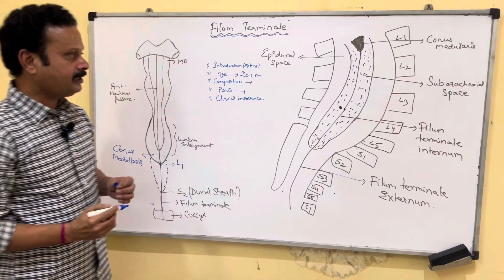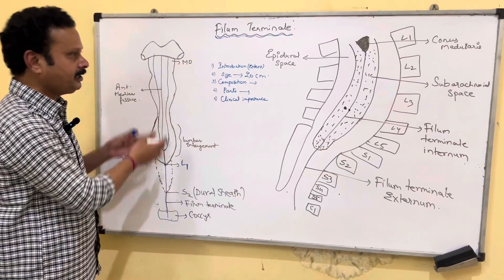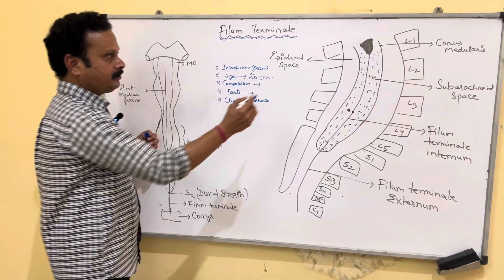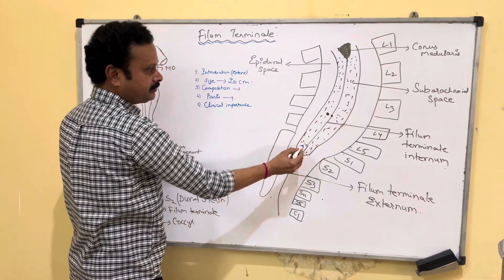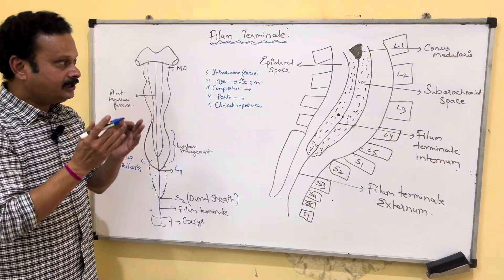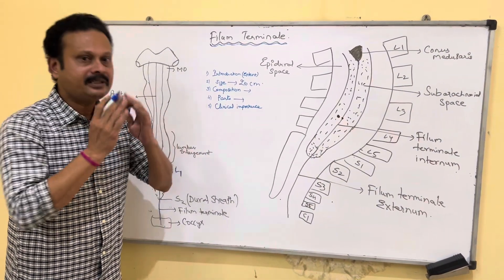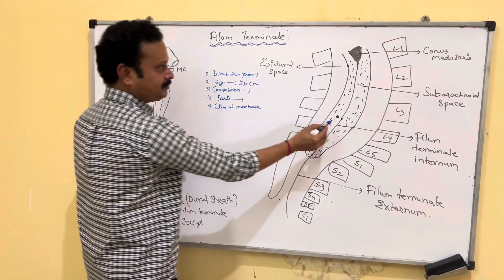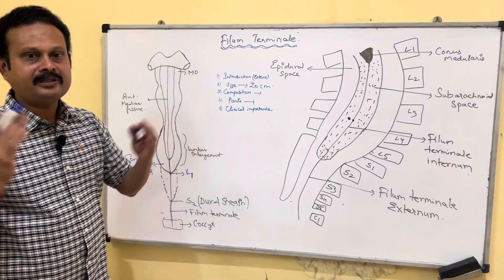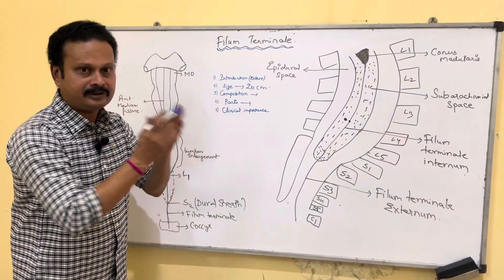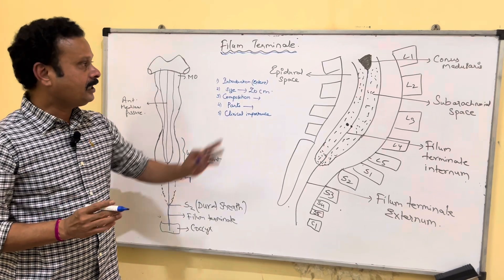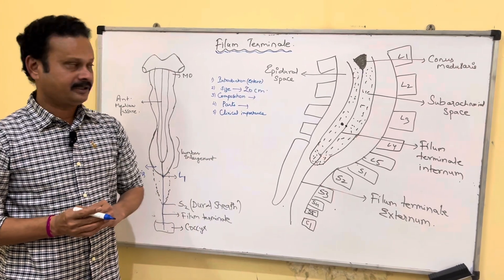Coming to its parts: it is made up of filum terminale internum and filum terminale externum. The filum terminale internum extends from the conus medullaris and is contained within the dural sac — it is limited on the outside by the arachnoid mater and dura mater. Hence it is called filum terminale internum, and it is around 15 centimeters long.